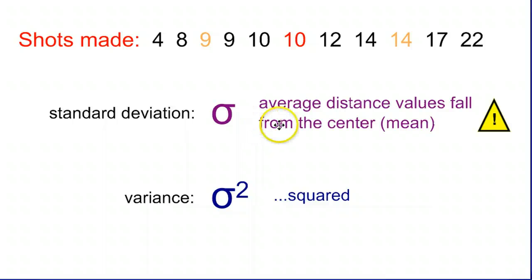And then all you do is take that standard deviation and you square it. And that's how you find the variance.